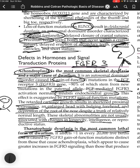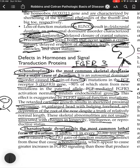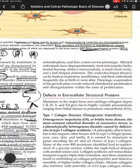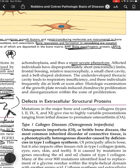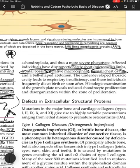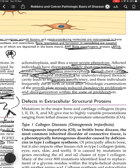Thanatophoric dysplasia is the most common lethal form of dwarfism, affecting approximately 1 in 20,000 live births. It is also caused by FGFR3 gain-of-function mutations, distinct from those in achondroplasia, causing greater increases in FGFR3 signaling and thus a more severe, lethal phenotype. Affected individuals have disproportionately short limbs, frontal bossing, relative macrocephaly, and a small chest cavity with bell-shaped abdomen. The underdeveloped thoracic cavity leads to respiratory insufficiency, and these individuals frequently die at or shortly after birth.